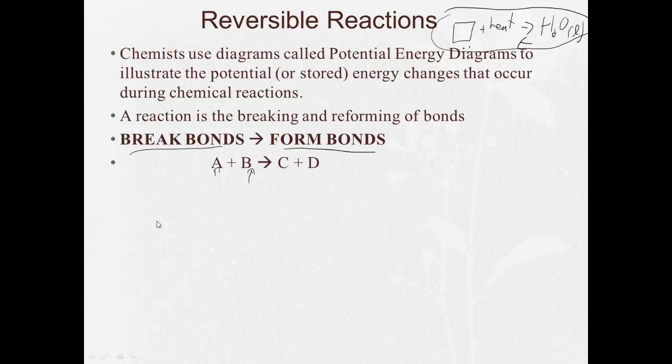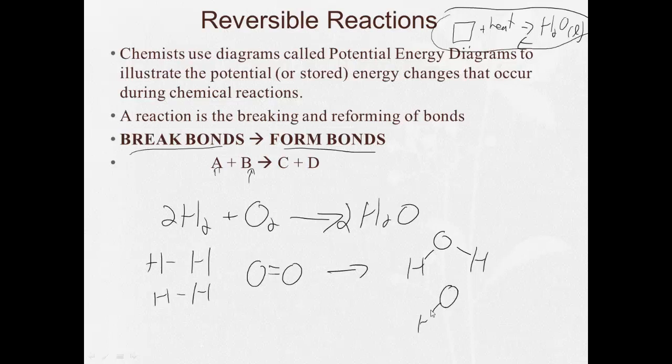So for example, let's say we have 2H2 plus O2 makes H2O. We have two molecules of hydrogen, one molecule of oxygen, and we're going to make two molecules of water. Well, in order to be able to bond the hydrogens with the oxygen, first we have to break these bonds.